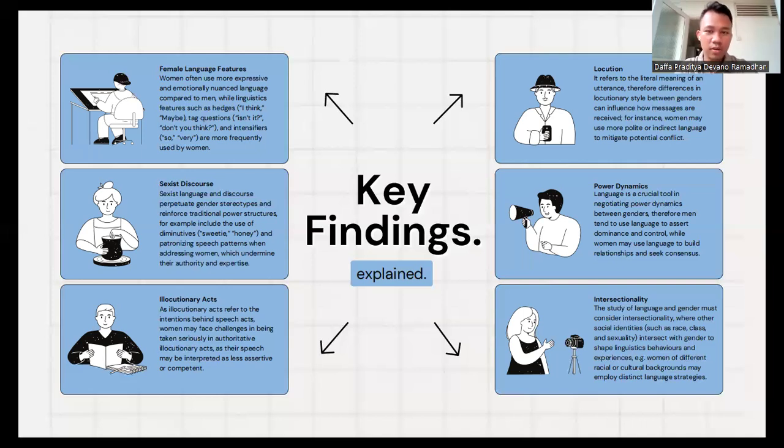The second one is sexist discourse. Sexist language and discourse refer to gender stereotypes and reinforce traditional power structures. Examples include the use of diminutives like 'sweetie,' 'honey,' and patronizing speech patterns when addressing women, which undermine their authority and expertise.